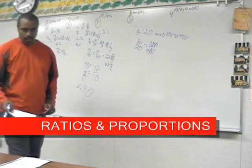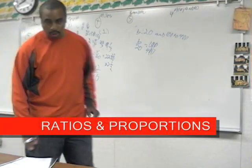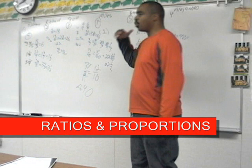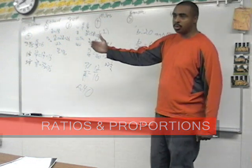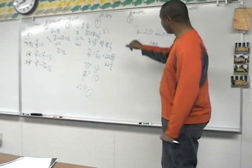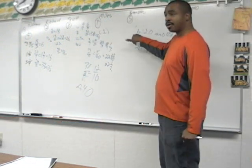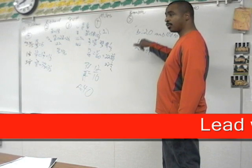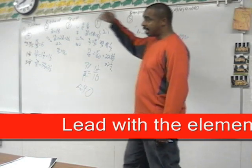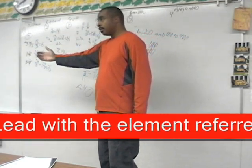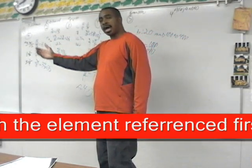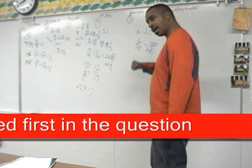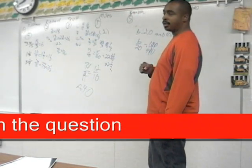The key to ratio proportions is that we've got to lead with what's referenced first. So if it's on the left, it's going on top; on the bottom, going on bottom. If they say pears to apples, then you put the number of pears on top and the number of apples on the bottom.